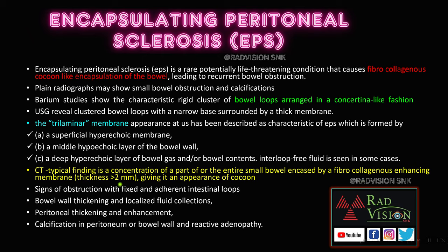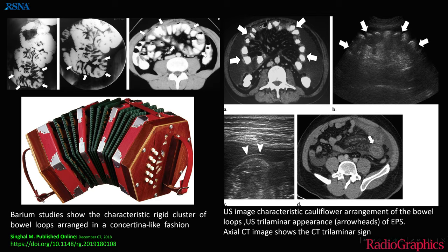On CT, there is concentration of part or entire small bowel loops encaged by a fibrocollagenous enhancing membrane with thickness greater than 2 mm, giving the cocoon appearance. On barium studies, you can see multiple rigid clusters of bowel loops that typically mimic the bellows of a concertina — a musical instrument — which is why it is called the concertina-like fashion.